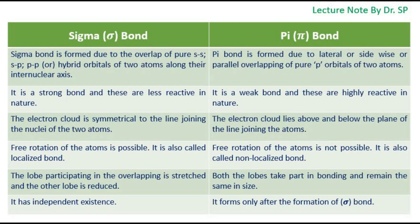The lobe participating in the overlapping is stretched and the other lobe is reduced in sigma bond. Both the lobes take part in bonding and remain the same in size in pi bond. Sigma bond has independent existence. Pi bond forms only after the formation of sigma bond.